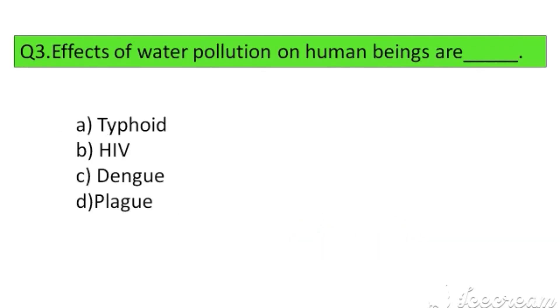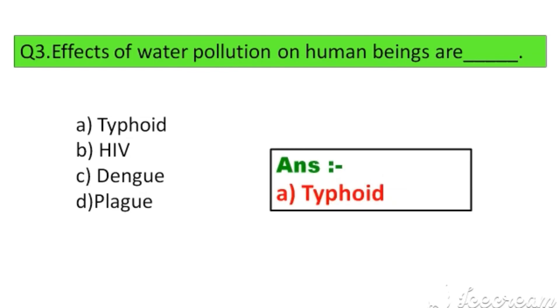Question number 3. Effects of water pollution on human beings are: Option A. Typhoid, B. HIV, C. Dengue, D. Plague. The right answer is Option A: Typhoid.